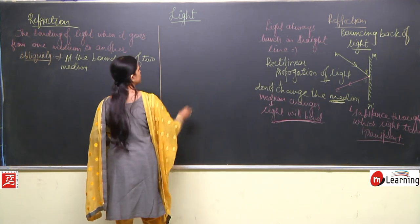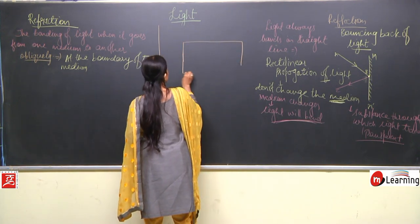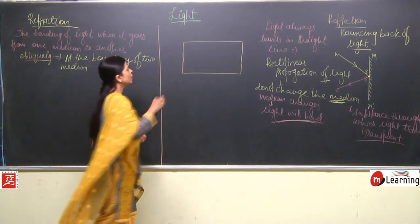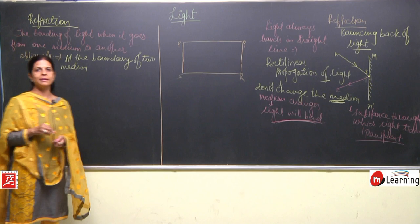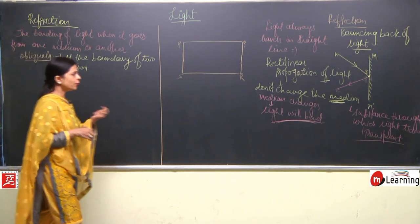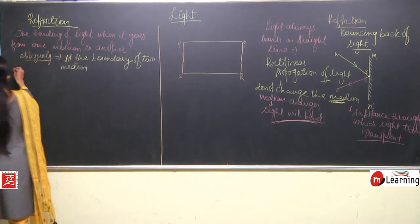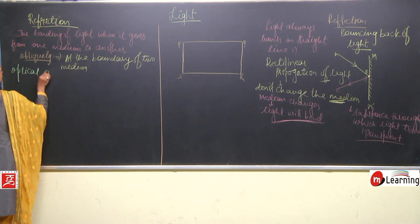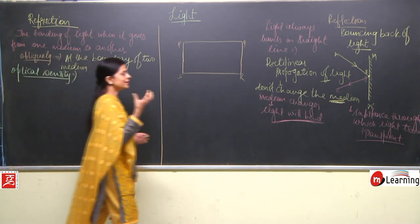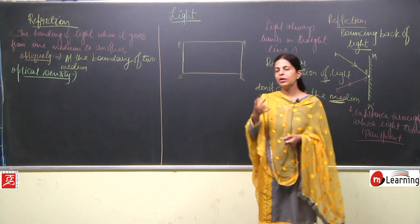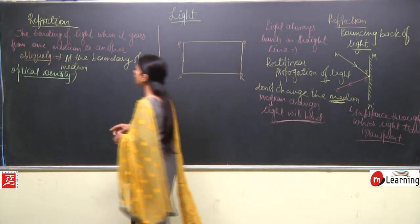To understand refraction, let's take a diagram. Suppose this is a glass slab named PQRS. Before we go further, one more important term has to be discussed — that is known as optical density. Every substance has its own density, and here we add the additional term 'optical' to understand how light behaves in different mediums.